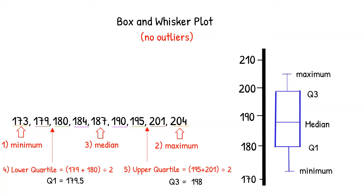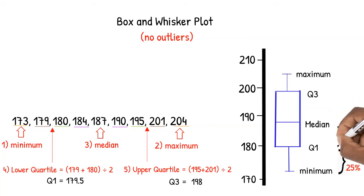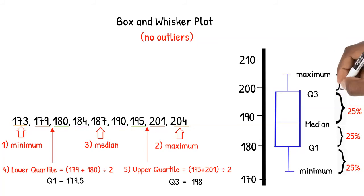This is what our finished box and whisker looks like. From this display, we not only see our five-number summary, we get a better sense of where our values lie. Since 25% of our numbers are between the minimum and the lower quartile, 25% are between the lower quartile and the median, 25% are between the median and the upper quartile, and 25% are between the upper quartile and the maximum.